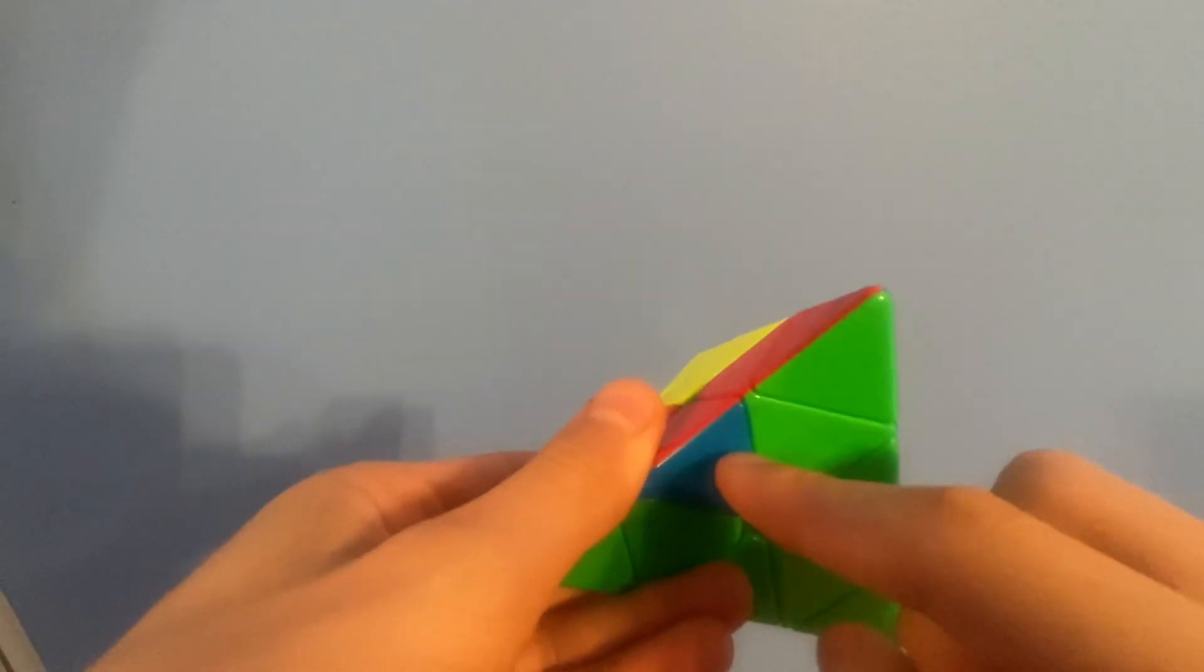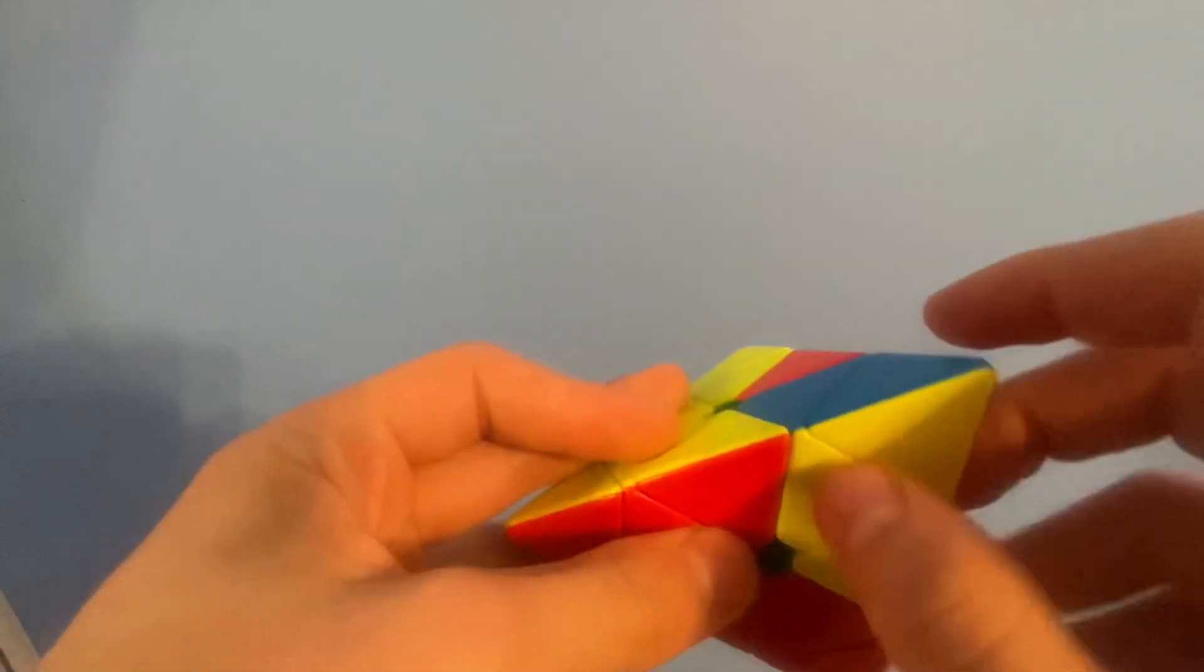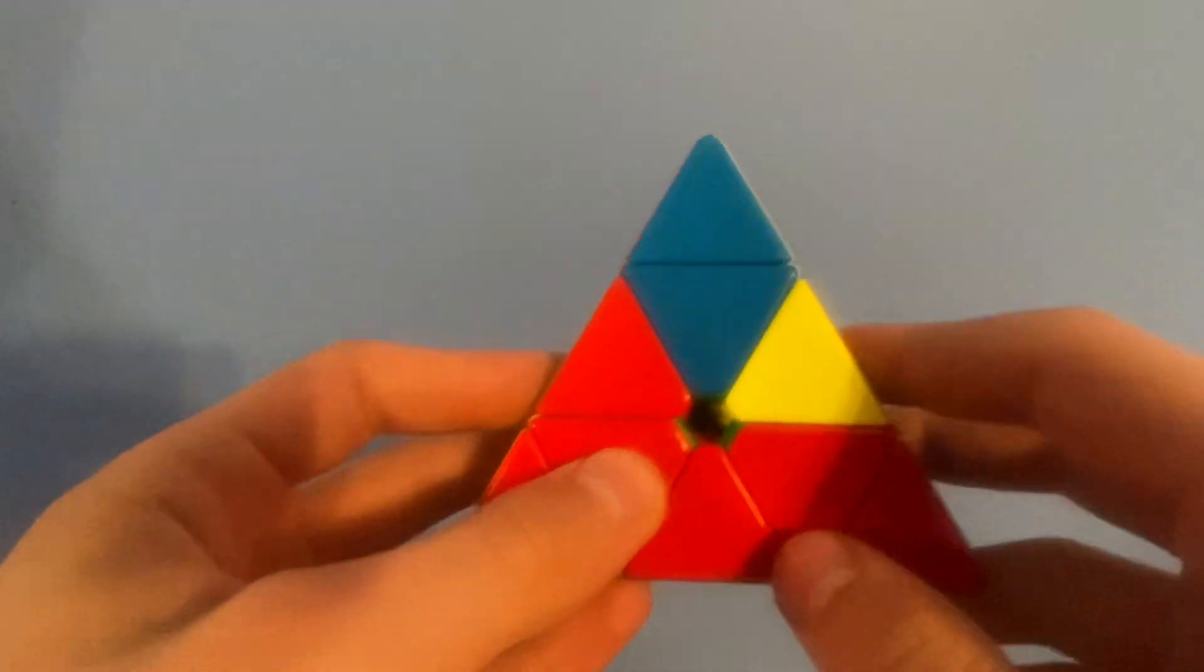Then, you want to look at this bottom sticker. This bottom sticker is blue, so I want to find the blue side, or the blue center, and put it in the front.